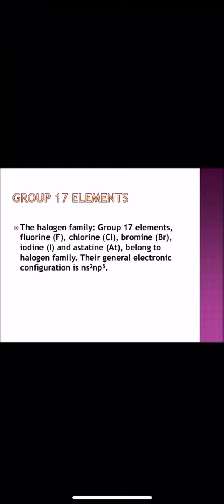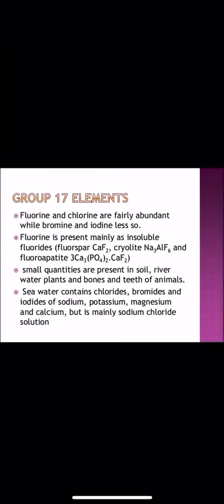We will begin with the halogen family, group 17 of P-block elements. The halogen family comprises of fluorine, chlorine, bromine, iodine and astatine. The general electronic configuration of these elements is ns2, np5.